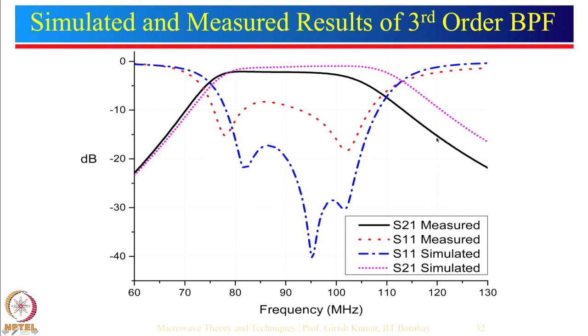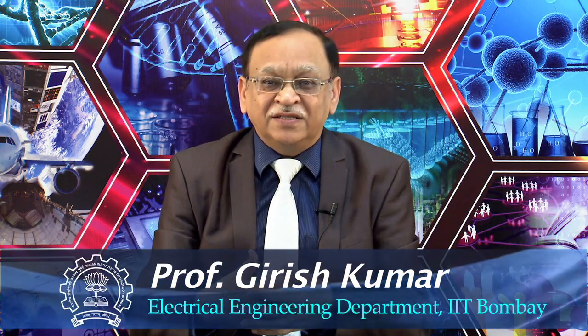We had seen both simulated and measured results. For measured results there is a small difference in the frequency — most of the time you will see a decrease in the frequency. This is mainly because the printed circuit board provides parasitic inductances and capacitances. So when you are designing a band pass filter, you must consider that there may be parasitic inductances and capacitances associated with the PCB and take corresponding precautions.